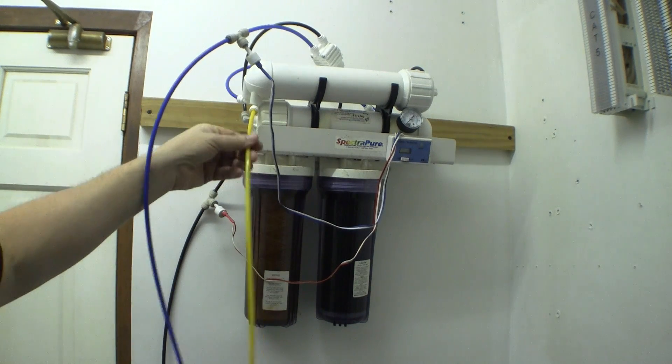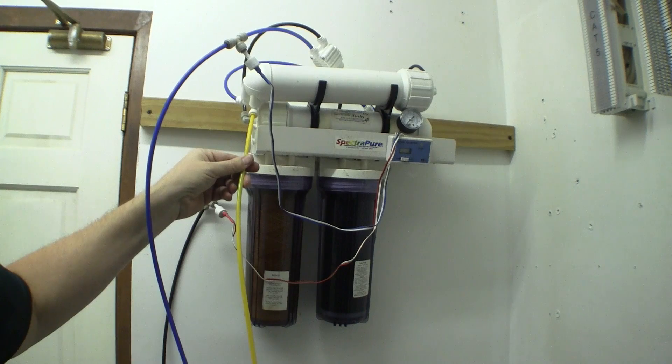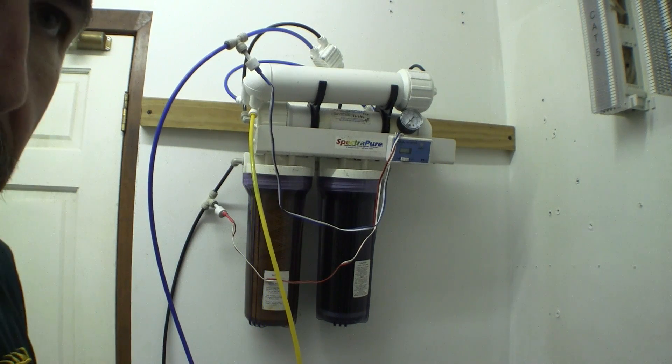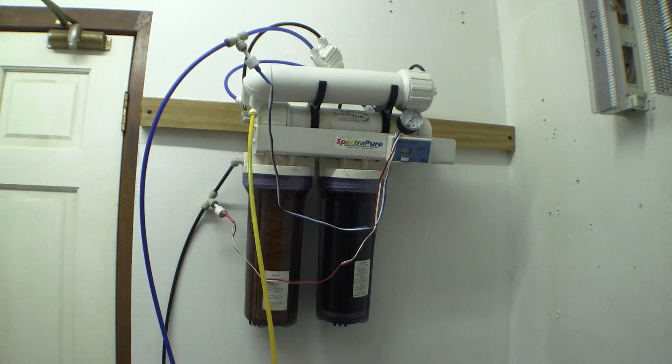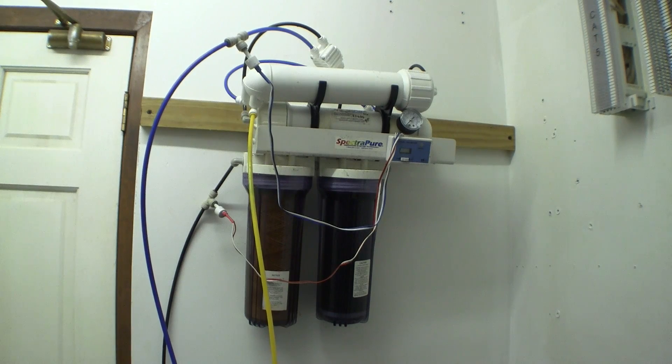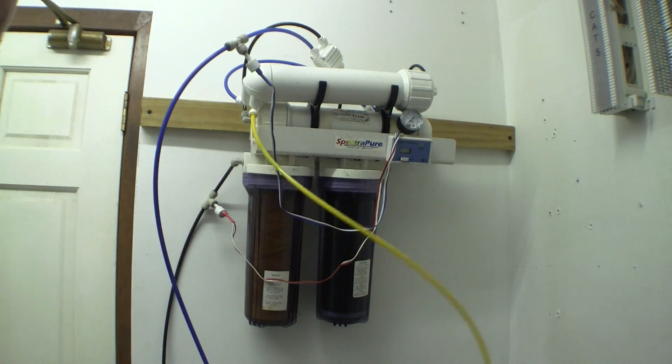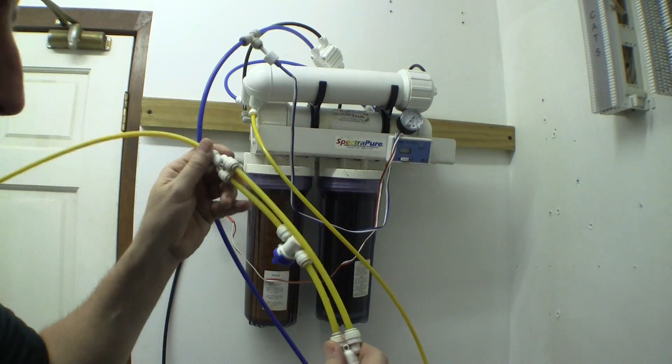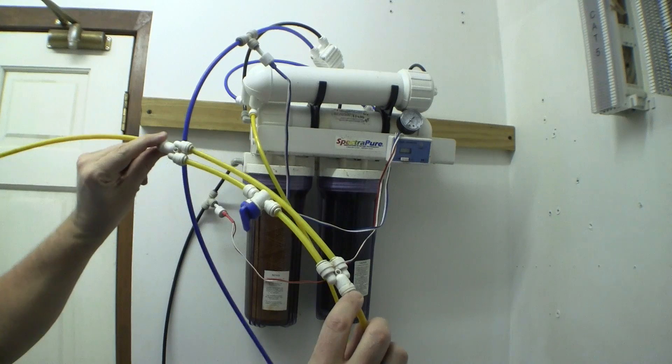So this yellow line is waste water and the waste water is what exits down the drain. An RO system wastes a lot of water. Three, four, sometimes five times as much water as it makes RO. The business end of the wastewater line is this and this is called a flush valve kit.